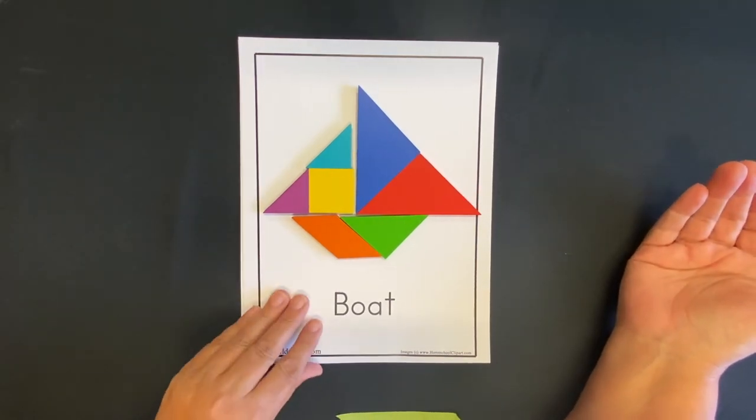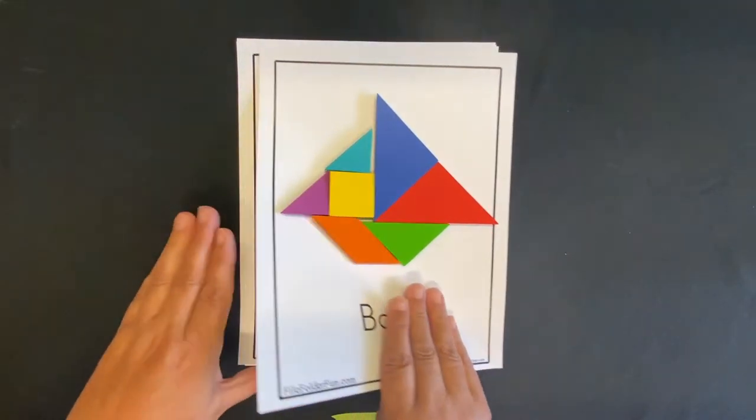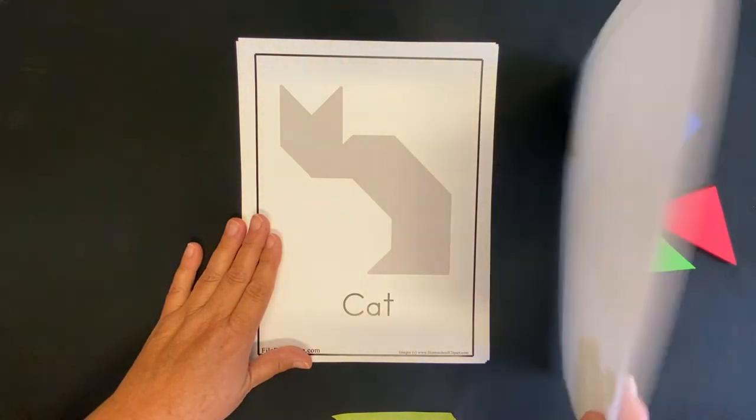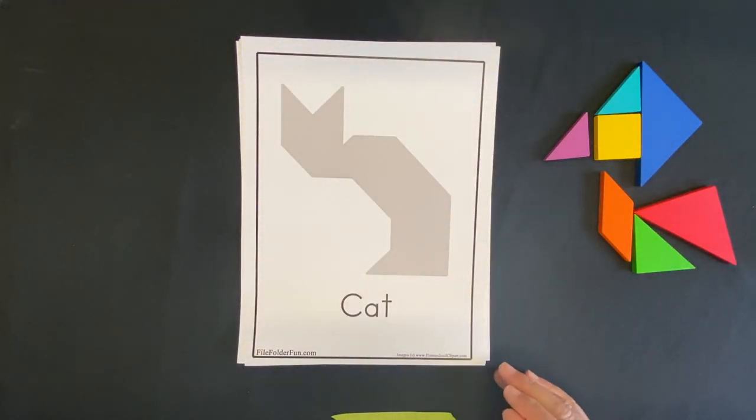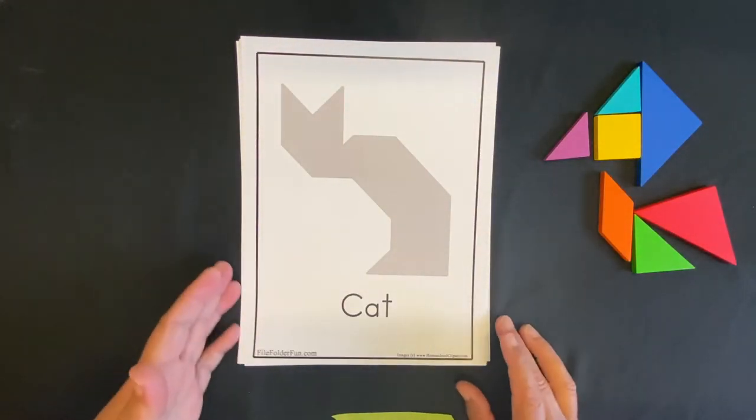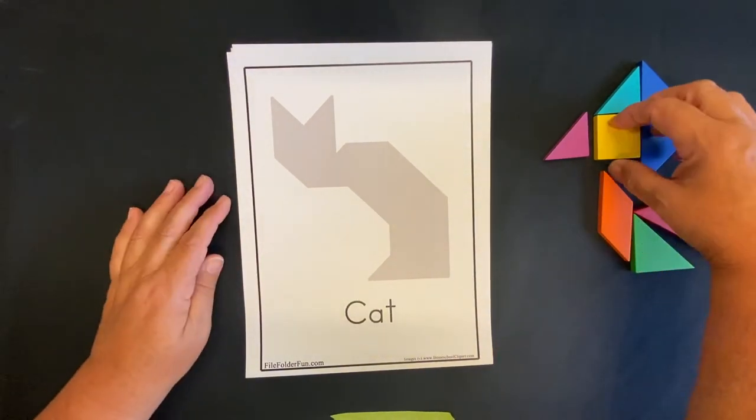Pretty cool, huh? Let's try another one. This one's a little bit trickier. This is a cat. Does it look like a cat to you? Let's figure out what our shapes should be.